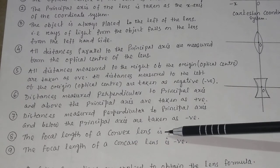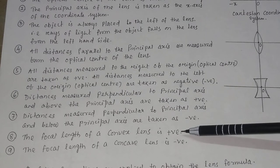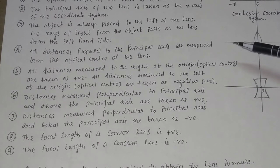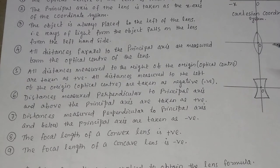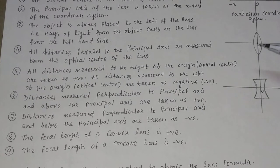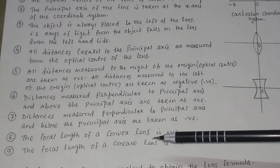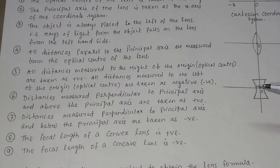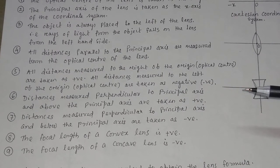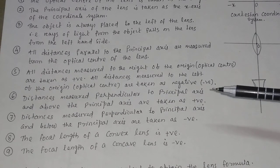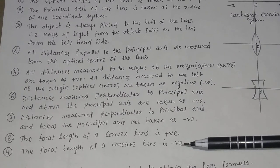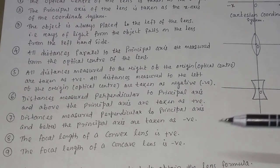The focal length of the convex lens is positive, because the object remains on the left side and the light will meet at the focus on the right hand side. The focal length of the concave lens is taken as negative, because for a concave lens the image is formed on the left hand side — the same side as the object.